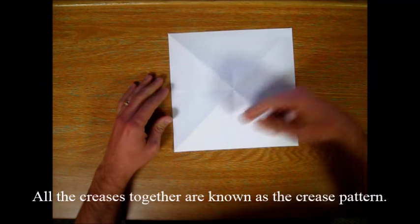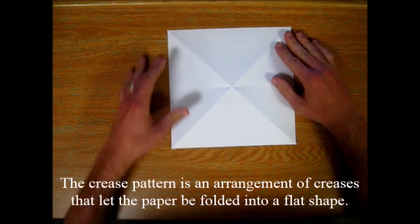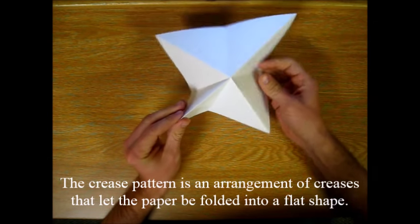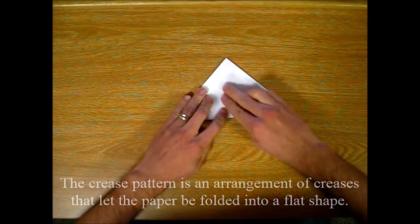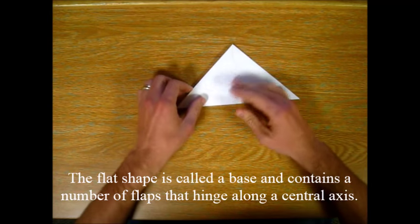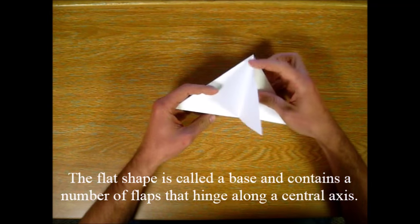All the creases together are known as a crease pattern. A crease pattern is an arrangement of creases that let the paper be folded into a flat shape. The flat shape is called a base and contains a number of flaps that hinge along a central axis.